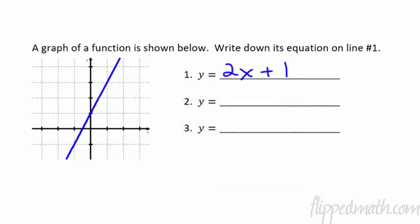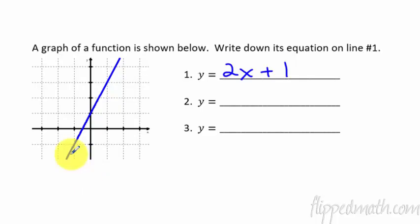Most of you probably came up with something like this — a line with a y-intercept of one, up one over one. That's usually what I get from students doing something like this. Now it's possible that you might have thought, well, hold on Mr. Bean, you don't even really have a scale on this. How are we supposed to know what's going on? So let me show you what the scale is and see if that changes your graph.